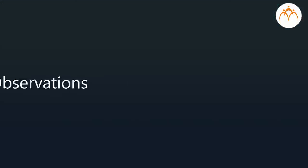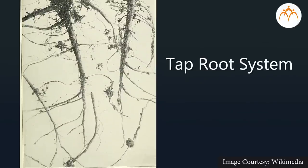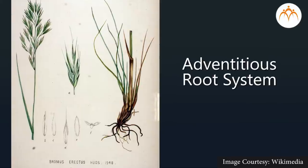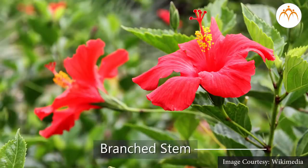Materials: hibiscus and tuberose plants with flowers, or any other suitable plants available in your area. Procedure: observe and study roots, stem, leaves, and flowers of hibiscus and tuberose. Note their characteristics. Observation: hibiscus has a taproot system; tuberose has an adventitious or fibrous root system.